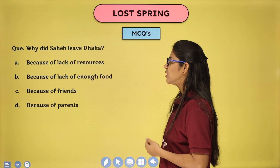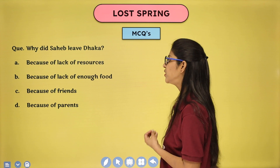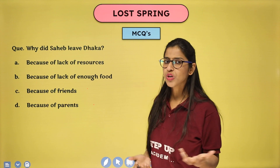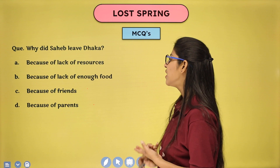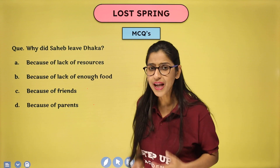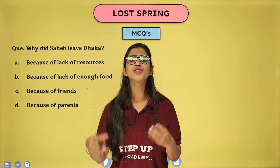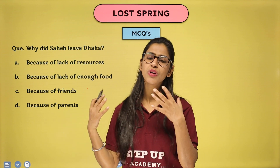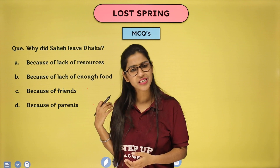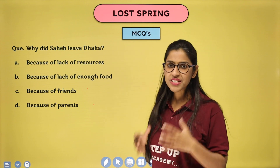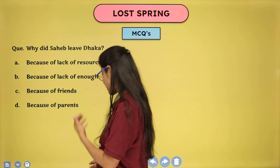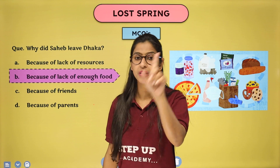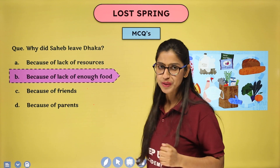Why did Sahib leave Dhaka? Options: because of lack of resources, lack of enough food, friends, or parents. It wasn't because of friends or parents as such. The correct answer is: lack of enough food. Resources are too far — even their basic immunities (food, clothing, shelter) weren't fulfilled. They were in rags, had torn old clothes. At least food was their major need — at least two meals a day — and that could not be met in Dhaka.